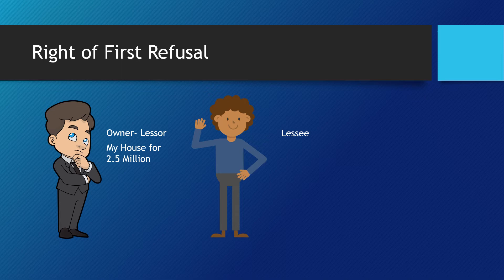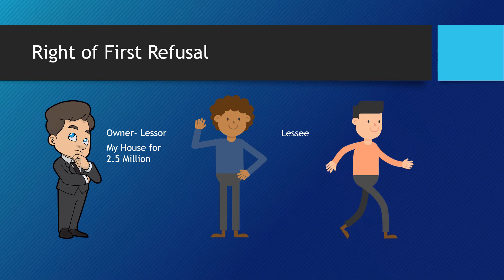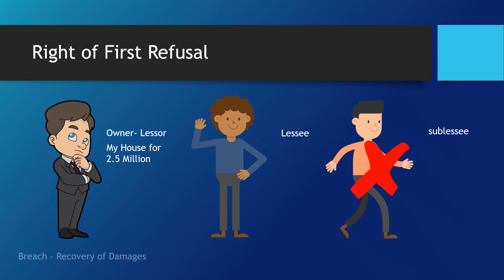If Mark has a standing right of first refusal as the lessee and he subleased the property to Peter, the right of first refusal cannot be exercised by the sublessee. Note also that the right of first refusal cannot be the subject of specific performance, but breach on the part of the promiser would allow recovery of damages.